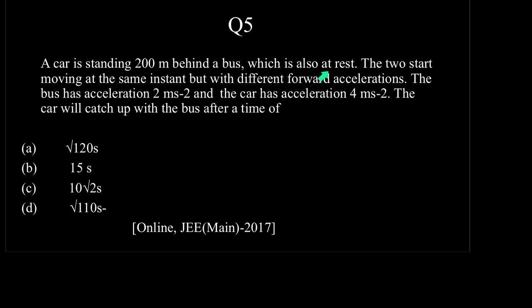A car is standing 200m behind a bus which is also at rest. The two start moving at the same instant but with different forward accelerations. The bus has acceleration 2m per second square and the car has acceleration 4m per second square. The car will catch up with the bus after time of.